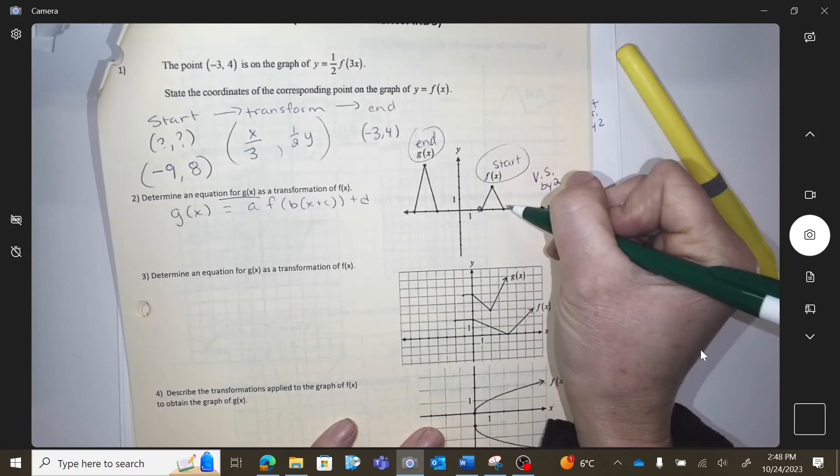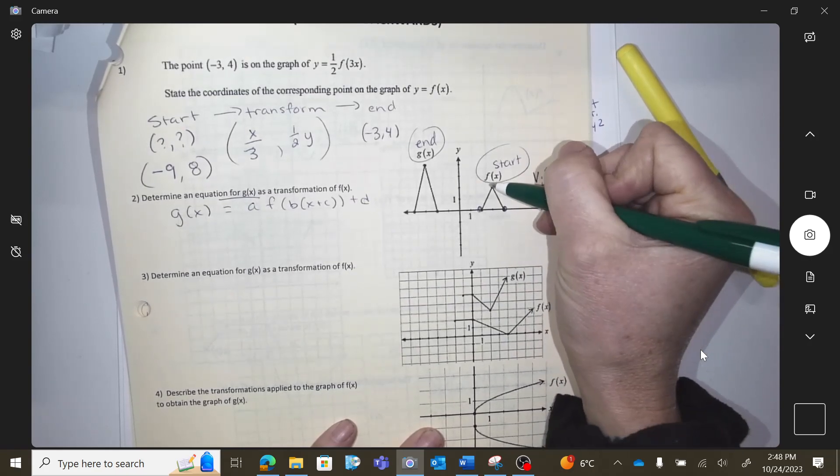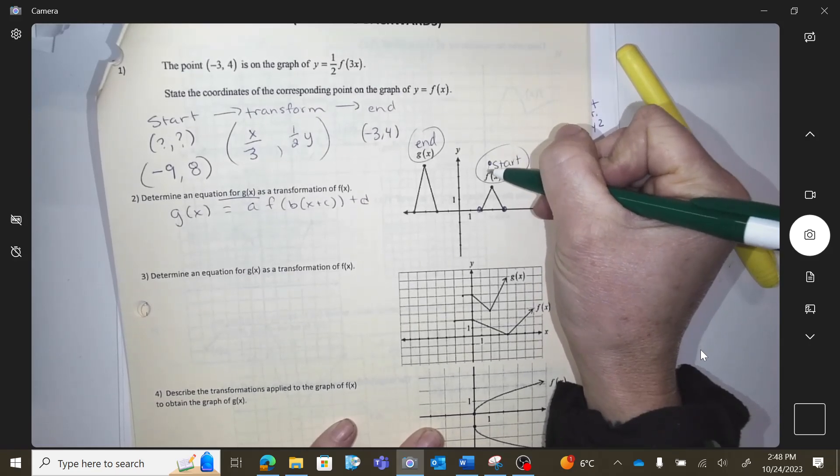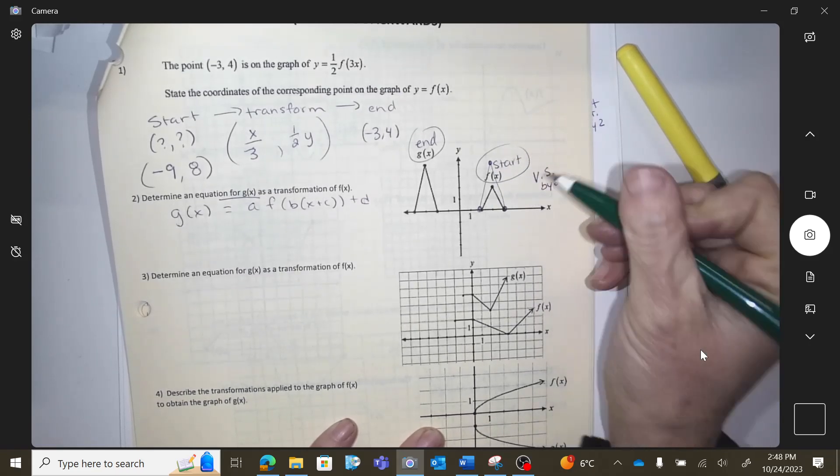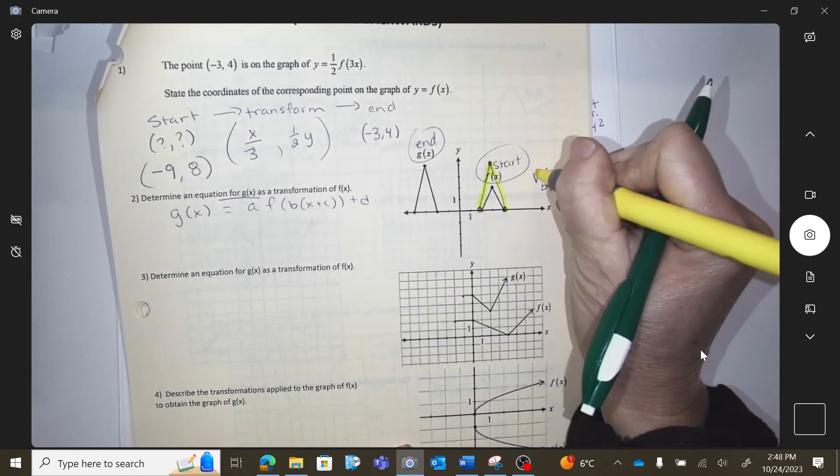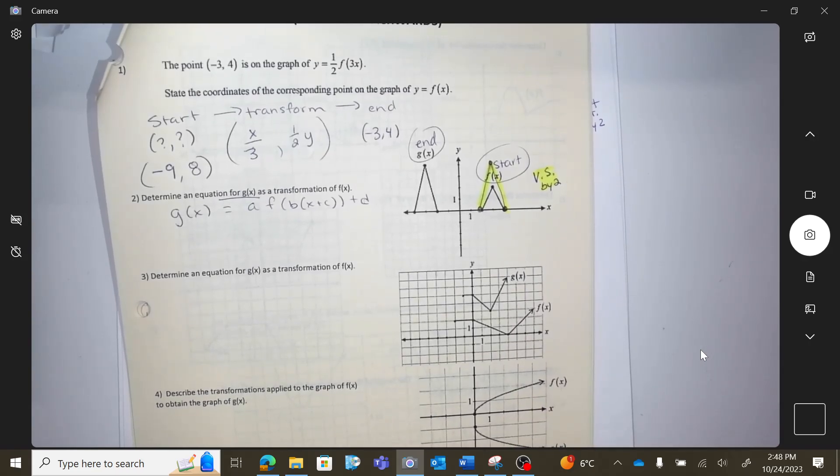This height of two would move up to the height of four. So that's what it would look like if I vertically stretched it by two.